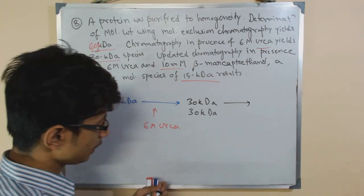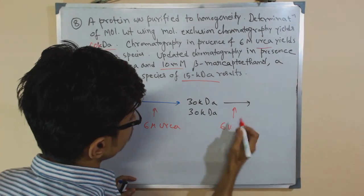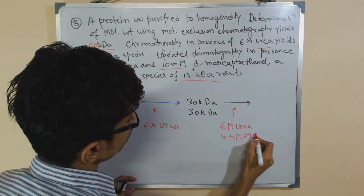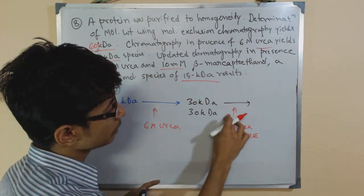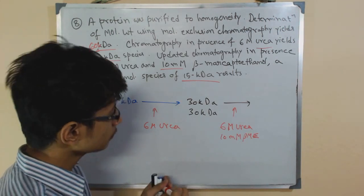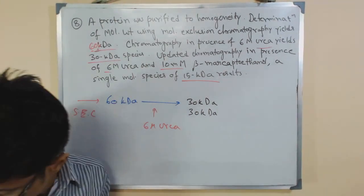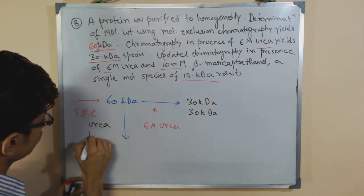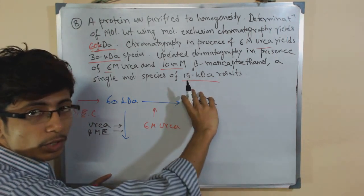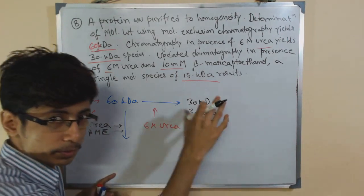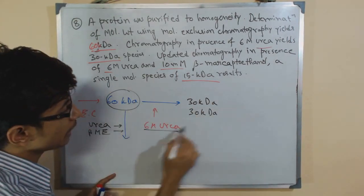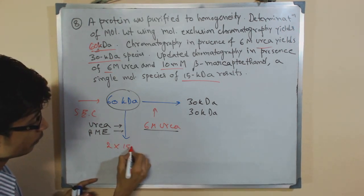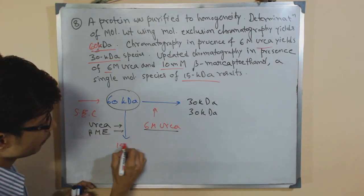After getting the 30 KD species, we take the original 60 KD and treat it — first with only urea to get 30 KD, and then with urea and beta-mercaptoethanol together. We do not apply urea and BME to the 30 KD fragment. We take the 60 KD, first use only urea to get 30 KD, then use urea and BME — and what we get is one single species of 15 KD.